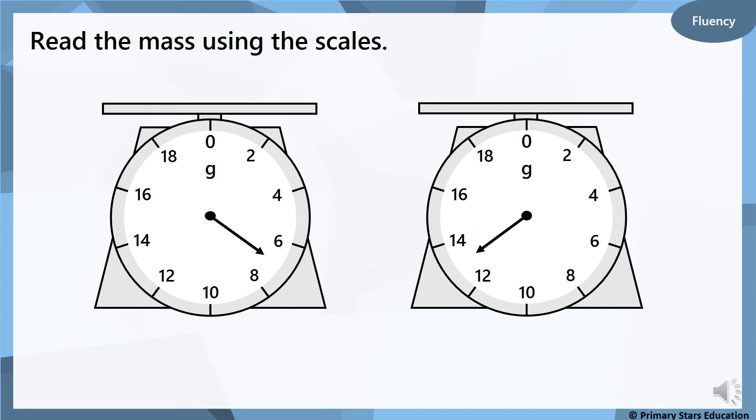Now these ones, they're getting a bit more tricky. Have a look at these scales. These scales are going up in twos. You can see 0, 2, 4, 6, 8, 10, counting up in twos each time. Now, this arrow is pointing somewhere between 6 and 8. Have a think about what that might look like on a number line. The scales are just like a round number line, really. What number would come between 6 and 8? 7 grams. See, it's not that tricky, is it? It's just a curved number line. That's all that you're looking at. The next one, look at where that arrow is pointing. It's a number between 12 and 14. I think you can work this out. It's 13 grams. Did you get that one right?